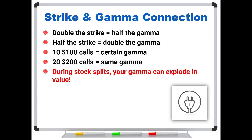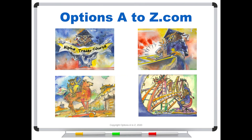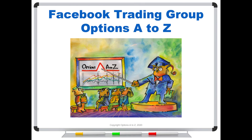You absolutely have to understand this strike and gamma connection. If you double your strike, you're going to cut your gamma in half — this is an important relationship to succeed with options trading. I hope this video has helped you understand why there's a very specific link between your strike price and your gamma. For anyone who'd like to learn more about the art and science of options trading, please check out the AlphaTrader course and strategy lab at optionsAtoZ.com. Also, please join us on the Facebook trading group, Options A to Z — you can find a link in the description below.